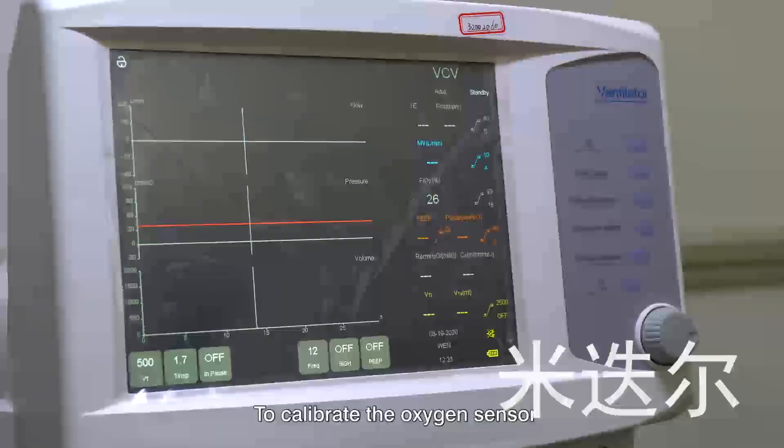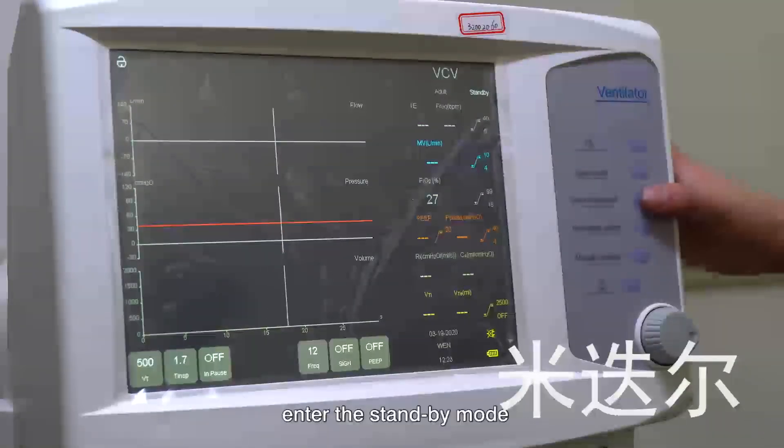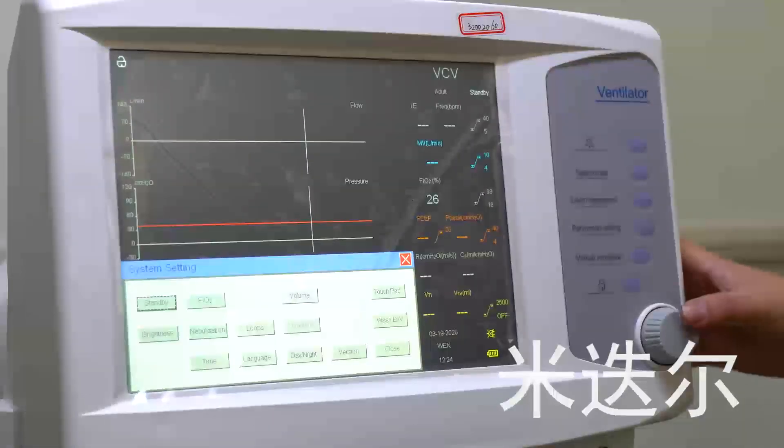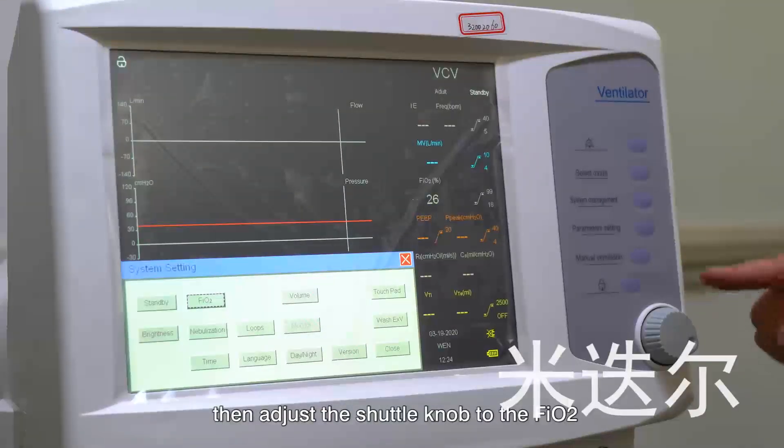To calibrate the oxygen sensor, enter the standby mode, then press the setting management. Then adjust the shift knob to the ISO2, press and the machine will automatically recalibrate the sensor.